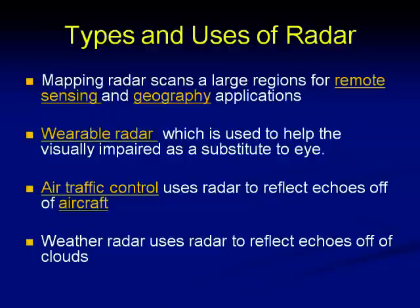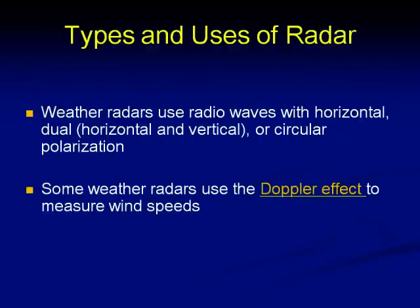We also have radars specially meant for mapping of the ground, known as mapping radars, meant for remote sensing and geography applications. Nowadays we are finding wearable radars which will be used as a substitute for the eye. We have air traffic control which uses a radar to reflect echoes of an aircraft. A separate class of radars known as weather radars is used to understand the behavior of atmospheric particles, moisture content, wind velocity, etc., to understand incoming rains, storms, and cyclones. Weather radars use radio waves with horizontal, dual, or circular polarization, and some use the Doppler effect to measure wind speeds.